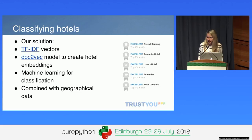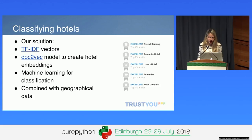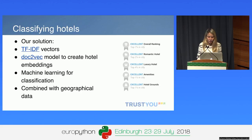First of all, we represent the reviews as vectors — that's the first step in order to then apply machine learning algorithms for classification. In particular, we consider two ways of representing texts as vectors. One is TF-IDF, which I'm going to present soon. The other one is doc2vec embeddings. After this, as I said, we apply machine learning algorithms. We also combine the review content with geographical data whenever it applies to improve our classifications.